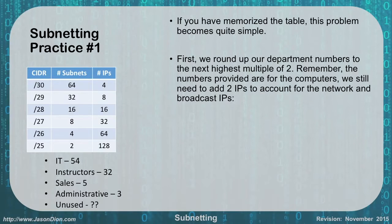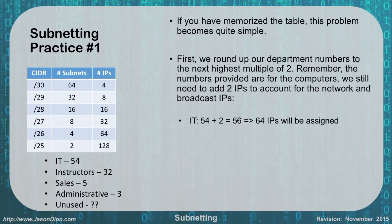If you memorize the table on the left the problem becomes very easy. First you're going to round up the number of addresses to the next highest multiple of two. Remember the numbers provided are for the computers, so we still need to add two IPs to account for the network and broadcast addresses. For IT we're looking at 54 plus two which gives us 56 IPs, which then rounds up to 64 IPs that will be assigned.